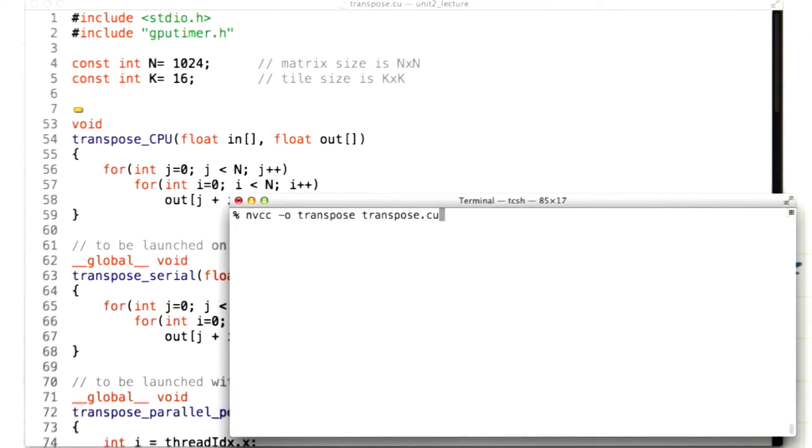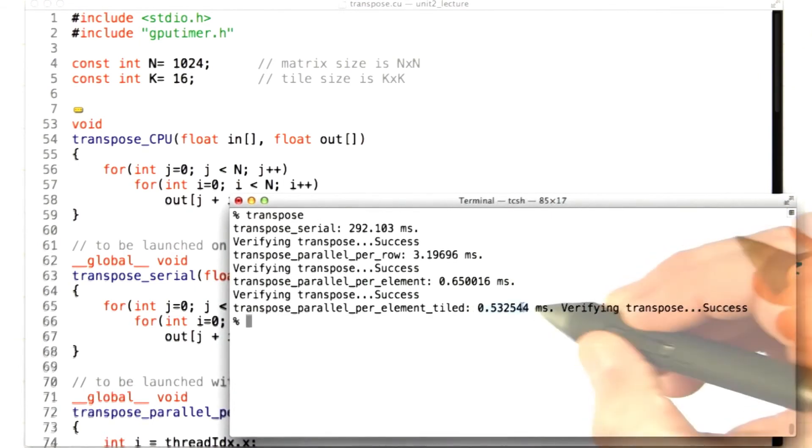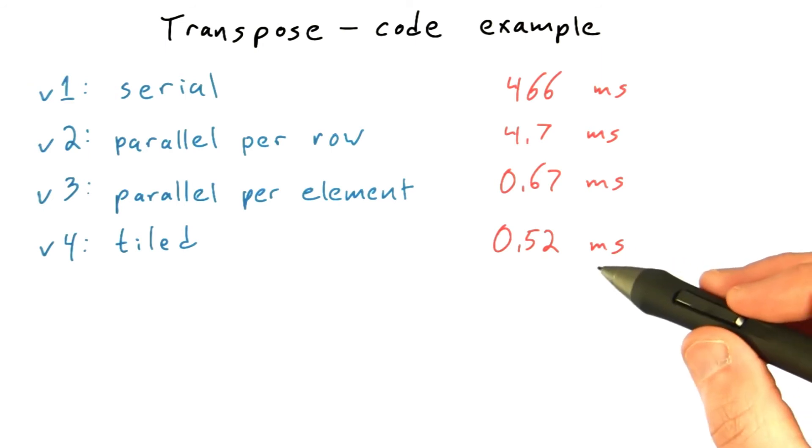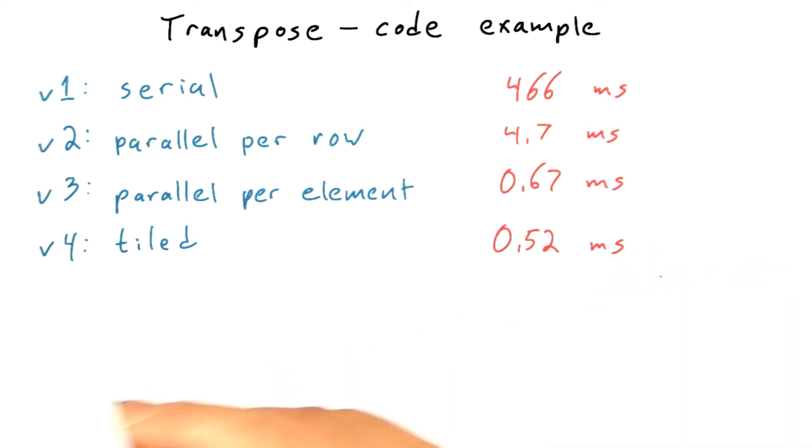Now we'll compile and run. Sure enough, this time we took just over 0.53 milliseconds. Let's update our running tally of results. The tiled version of our code managed to get about half a millisecond by adjusting the tile size.